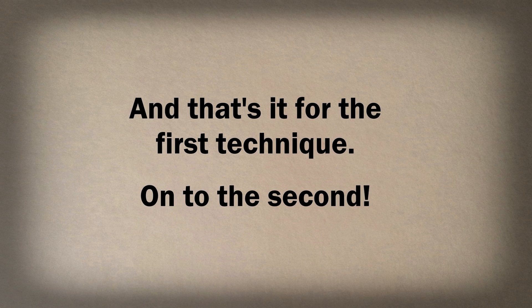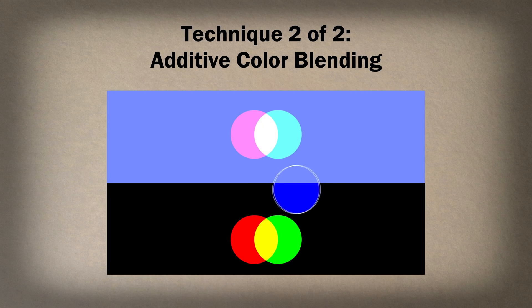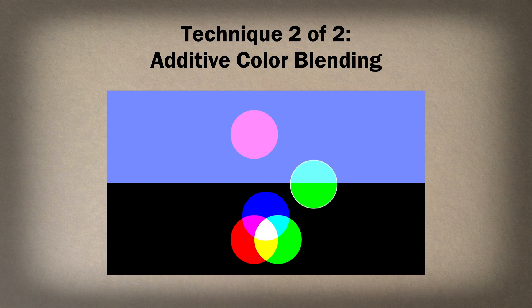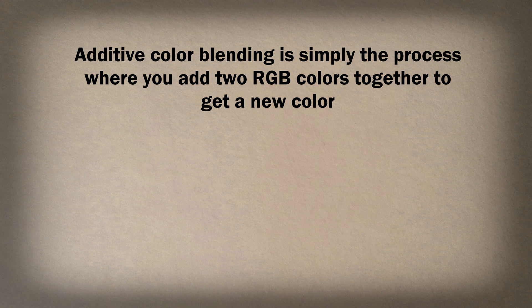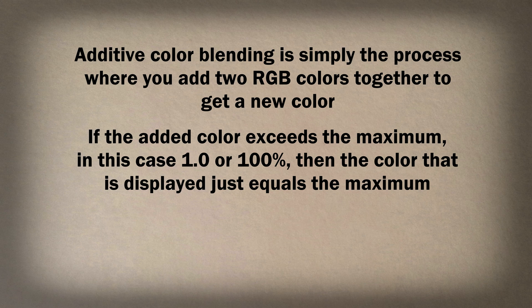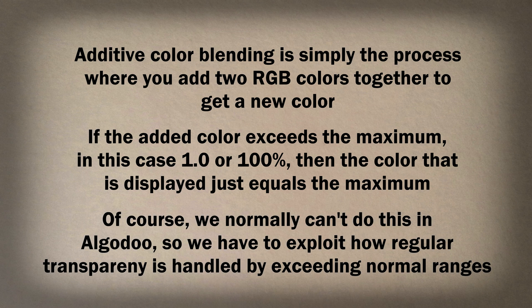And that's it for the first technique. On to Technique 2: Additive Color Blending. Additive Color Blending is simply the process where you add two colors together to get a new color. If the added color exceeds the max — in this case 1 or 100% — then the color that is displayed just is the max.